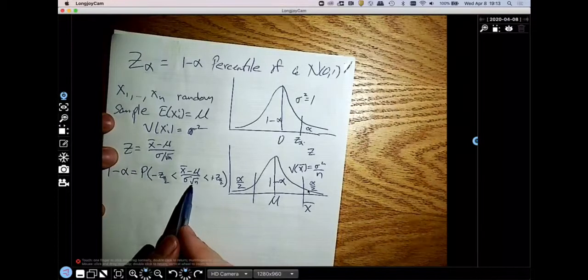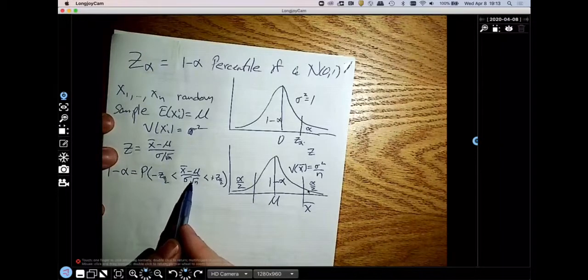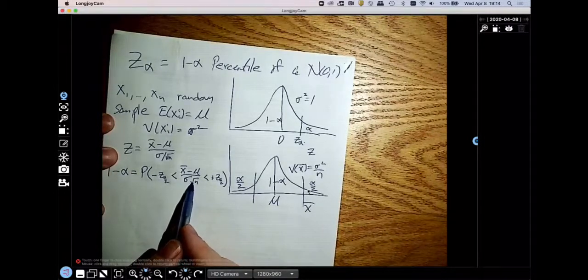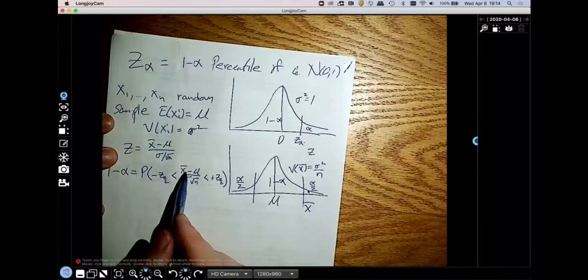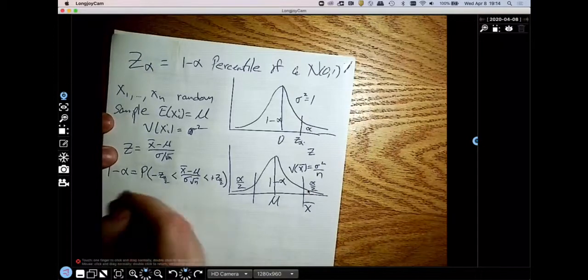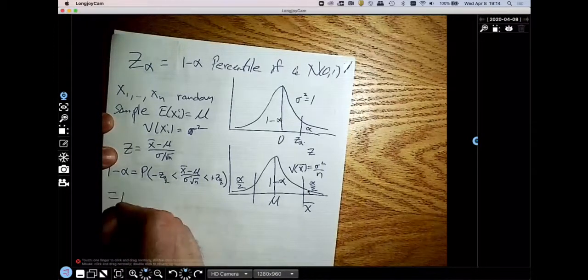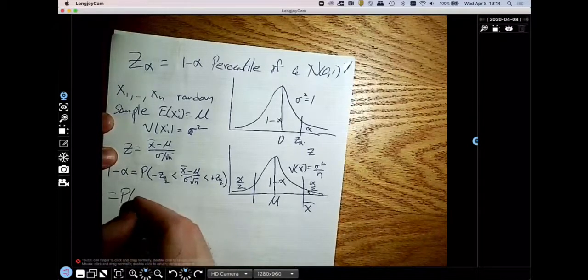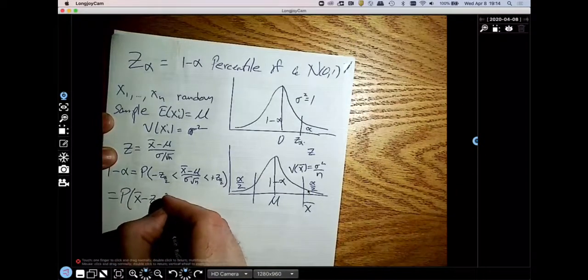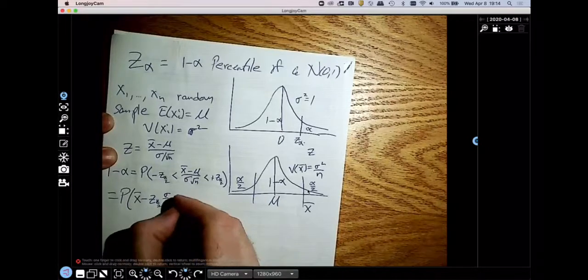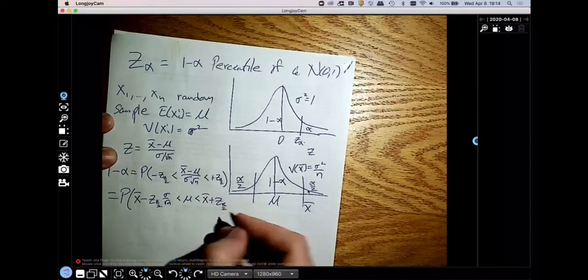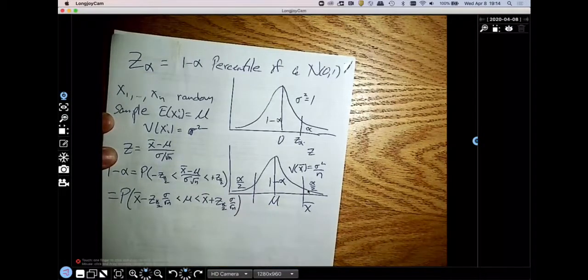So remember what we do when we compute a confidence interval. We arrange some terms. I will multiply all three parts of this inequality by the denominator. And then I'm going to do something really strange. I'm going to move the X bar to the outside and keep the mu in the middle.